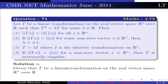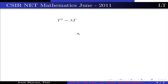Given that T is a linear transformation on R^n over R such that T² = λT for some λ ∈ R. Since T² = λT, this implies T(T − λI) = 0, which implies either T = 0 or T = λI.